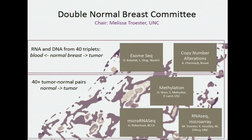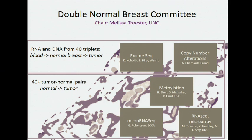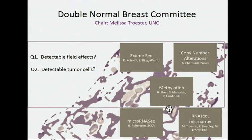With that background in mind, I'm now going to turn to what we've been doing with the TCGA double normal project. I'm representing data from a number of different groups, and I'll start with the DNA analysis. This is data where we had 40 triplets — normal breast tissue adjacent to the tumor, the tumor itself, and blood. Exome sequencing was performed by the WashU group with Dan Cobalt and Lee Ding doing the analyses presented here. We also had copy number alteration data from Andy Cherniak, as well as methylation data. With methylation, we don't have a blood normal standard for comparison. Our key question across all three DNA data types is: are there detectable field effects, and are there detectable tumor cells? The idea was that adjacent normal tissue could potentially be used as control tissue for other TCGA analyses.